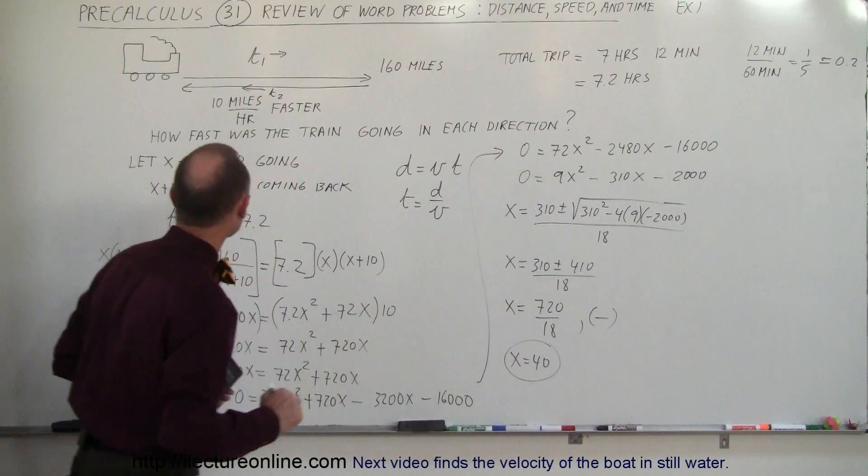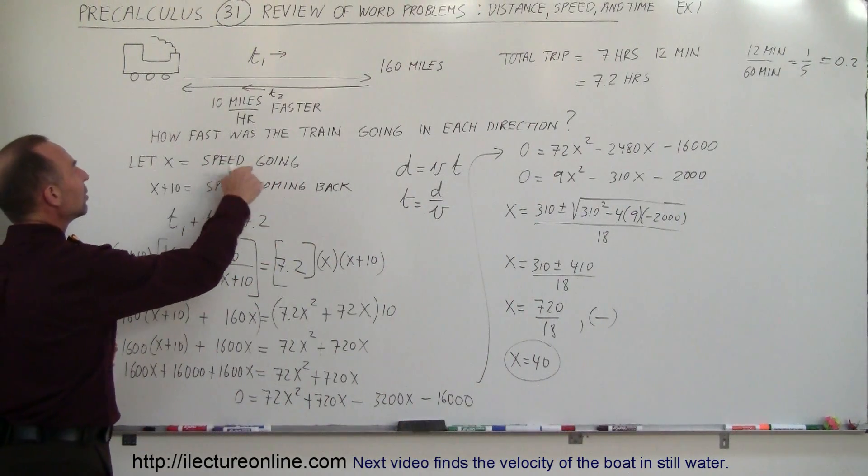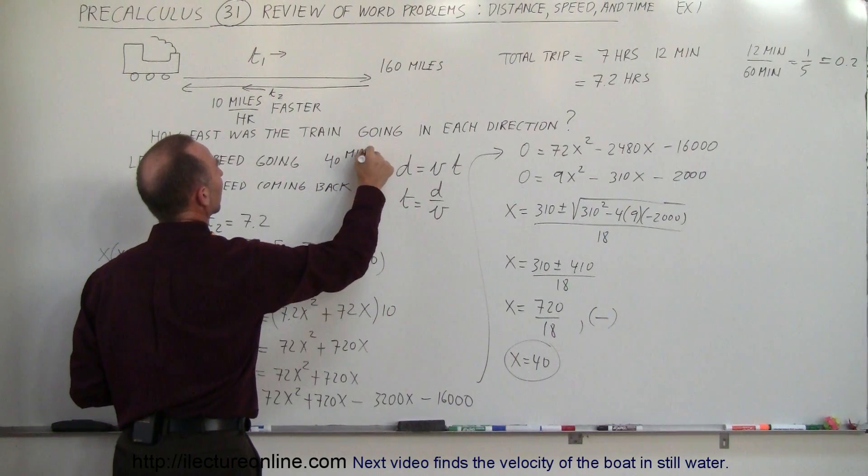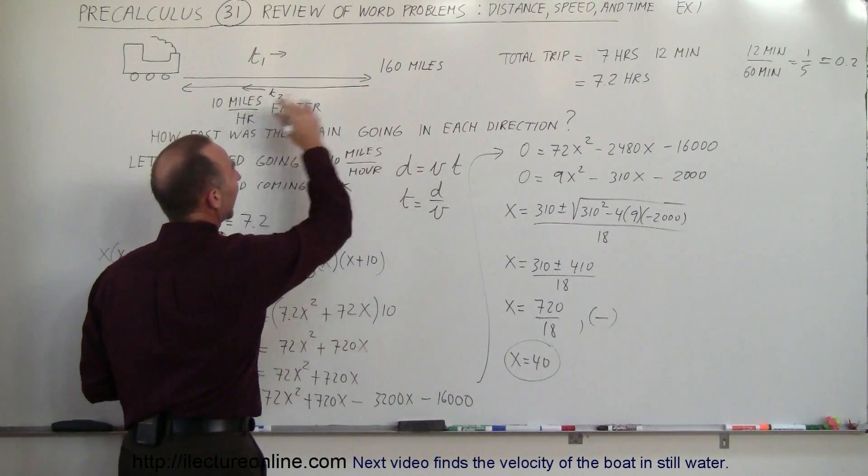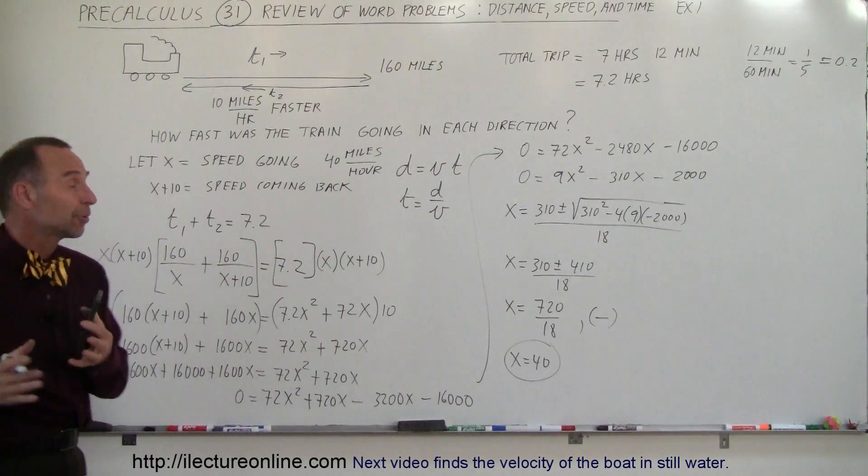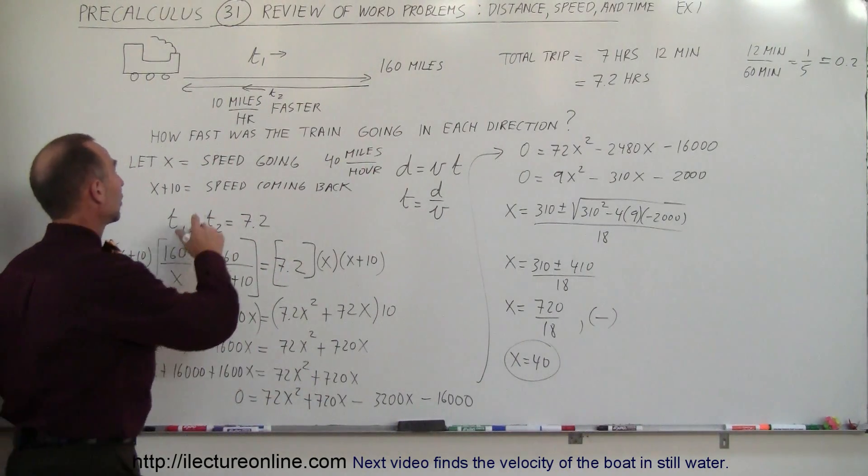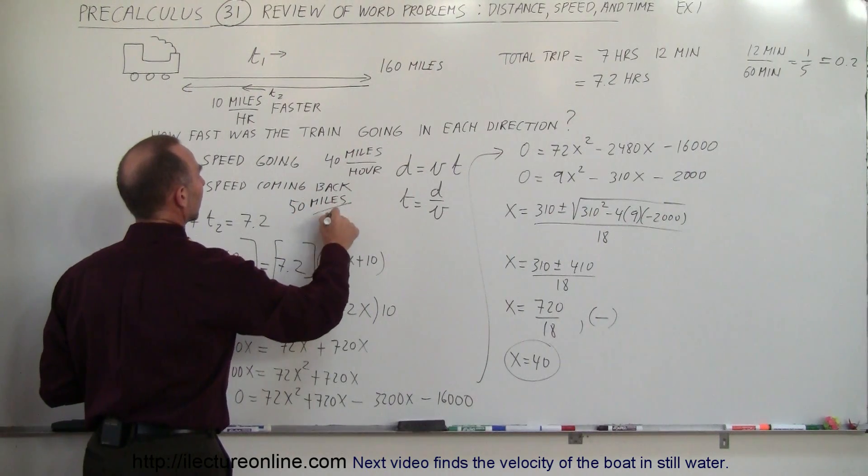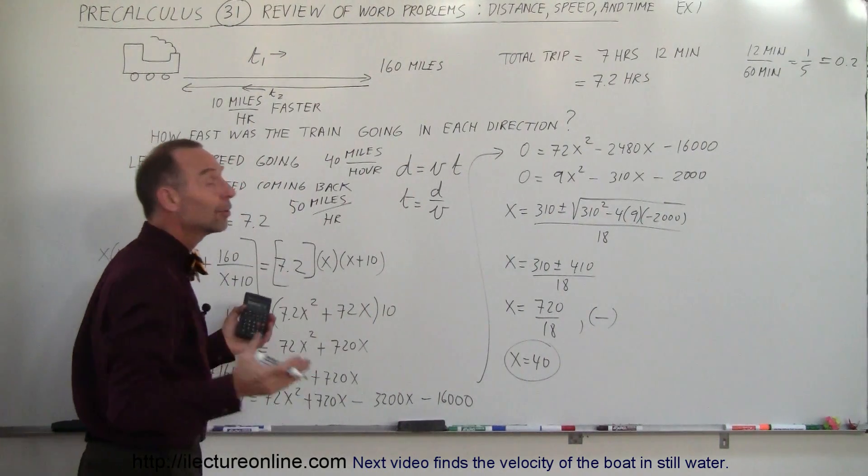What does that mean, coming back up here? Let x equal the speed going, so 40 miles per hour was the speed of the train going out, and since the train was going 10 miles per hour faster coming back, it would be 50 miles per hour for the train coming back, and those are the answers.